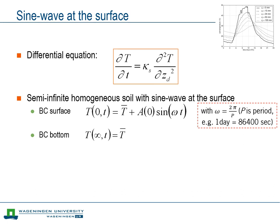Now the lower boundary condition. Here we assume that at very large depth, the temporal temperature variation has vanished, and the temperature is simply equal to the mean temperature.